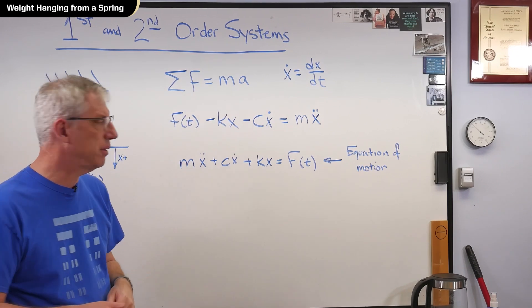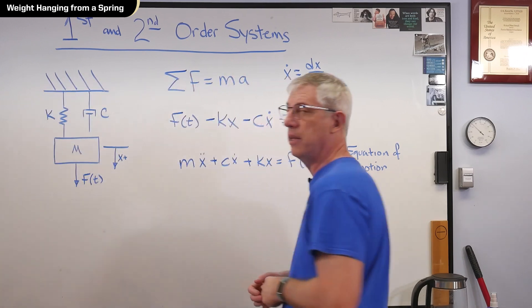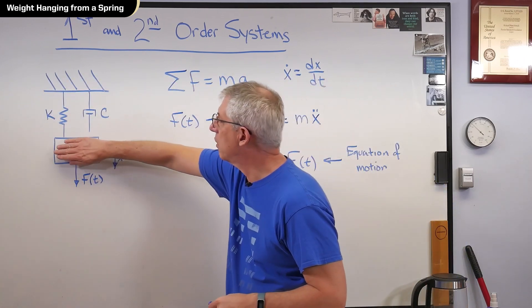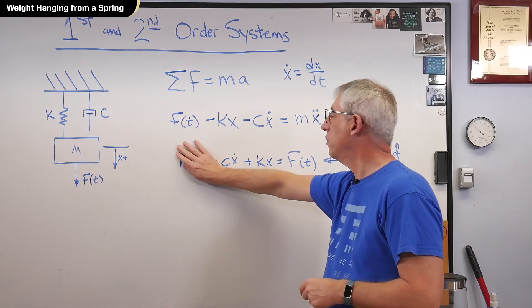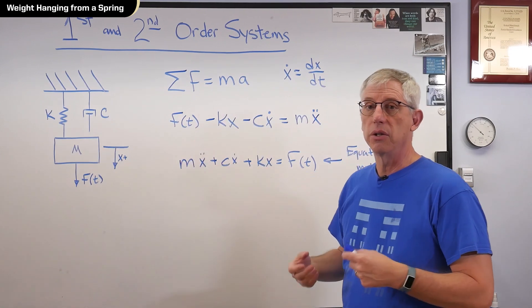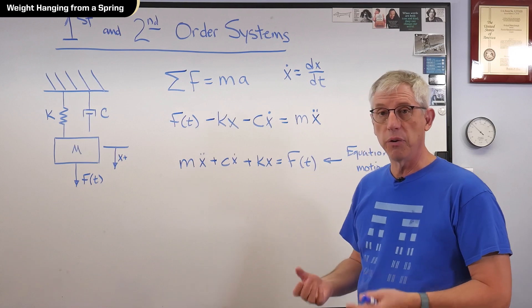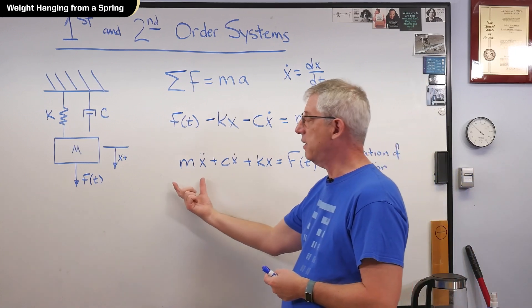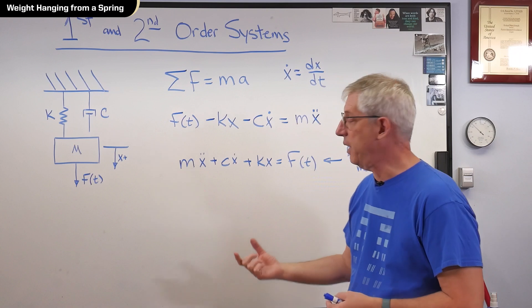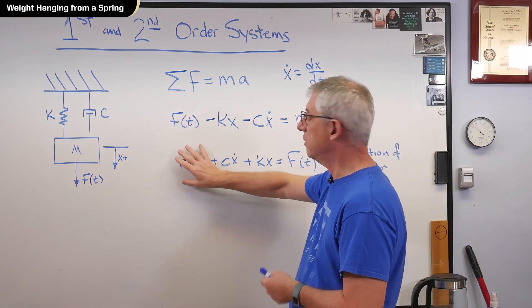How do you turn it into a first order system? Well, eliminate the mass. What if the mass went to zero? Well, that term goes to zero. And what I've got left is a first order system. So, difference between a first order and a second order system, does that second derivative exist? If it does, second order system. If it doesn't, first order system.